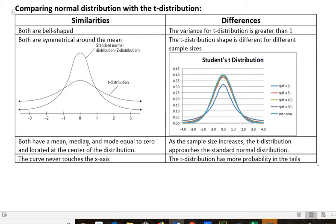The mean, median, and mode all are equal to zero in both. This is the similarity column here. And they're all located at the center of the distribution. And the curve never touches the x-axis.